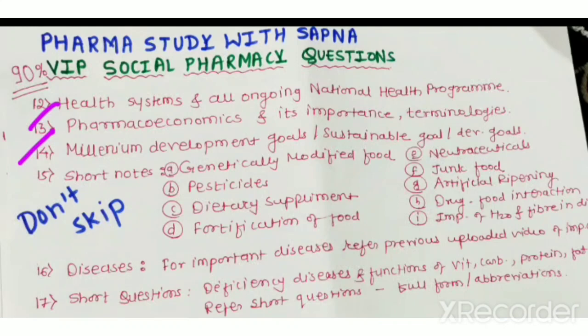For pharmacoeconomics, write its importance and the different terminologies used. Next is the millennium development goals — there are different types of goals you have to prepare: millennium development goals, sustainable development goals, and other development goals in detail, as this is a very important question. For short notes, topics that may be asked include genetically modified food, pesticides, dietary supplements, fortification of food, nutraceuticals, junk food and their ill effects on health, artificial ripening, and drug-food interactions with examples.